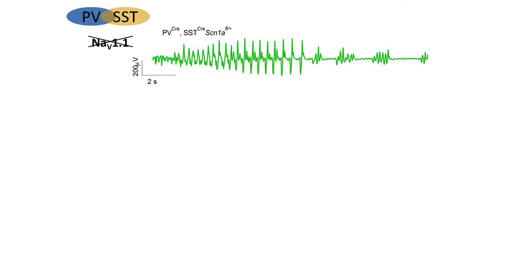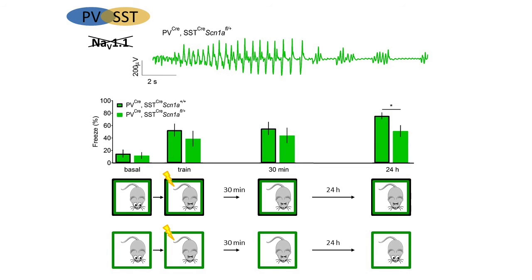Deletion of Nav1.1 simultaneously in both parvalbumin and somatostatin-expressing interneurons had synergistic effect on epilepsy, with earlier onset of seizure susceptibility and longer duration of thermally induced seizures. Moreover, in addition to autistic-like features and hyperactivity, mice with combined deletion of Nav1.1 in both types of interneurons had impairment of long-term context-dependent fear memory.